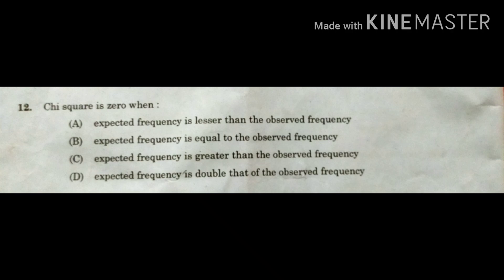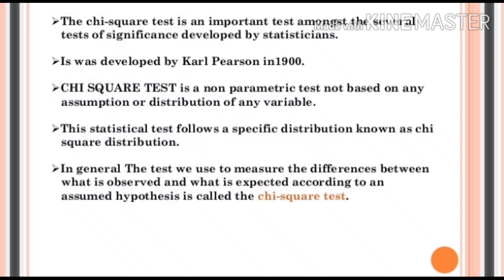First, let us understand what the chi-square test is in brief. The chi-square test is one of the important tests to find out significance. It was developed by Karl Pearson in 1900. The chi-square test is a non-parametric test and is not based on any assumption or distribution of any variable. These statistical tests mainly follow a specific distribution known as the chi-square distribution. In short, the chi-square test measures the difference between what is observed and what is expected according to an assumed hypothesis.